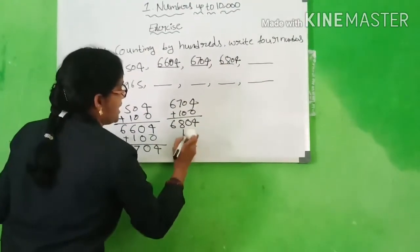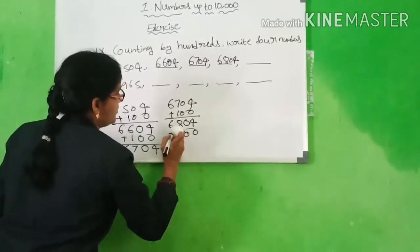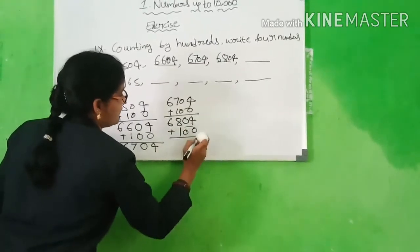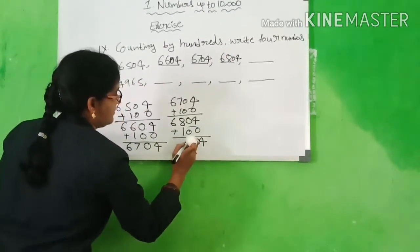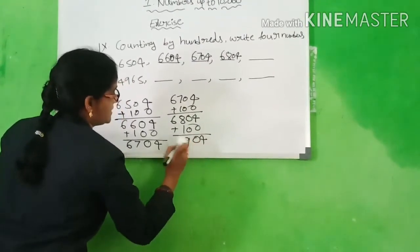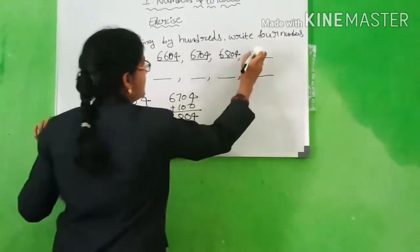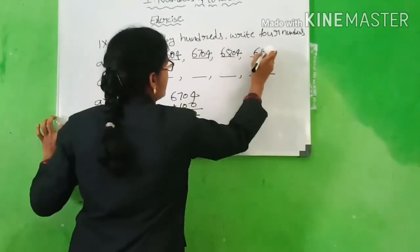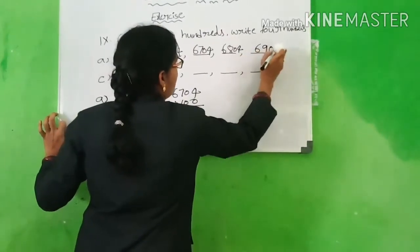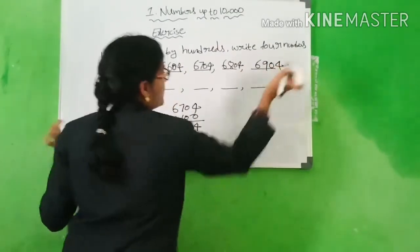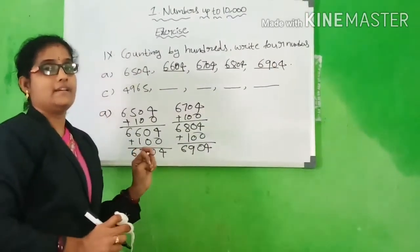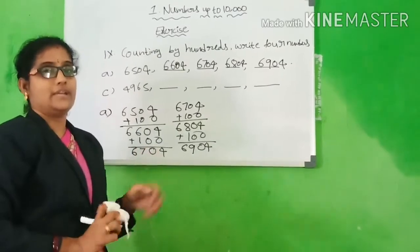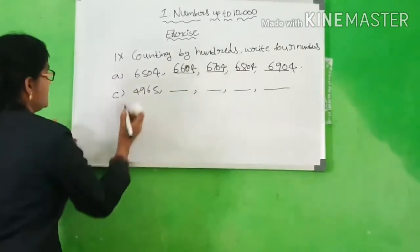Next, we have to count 100 more: 4, 0, 8 plus 1 is 9, 6. What is the answer? 6,904. Okay, children. Next, C1.